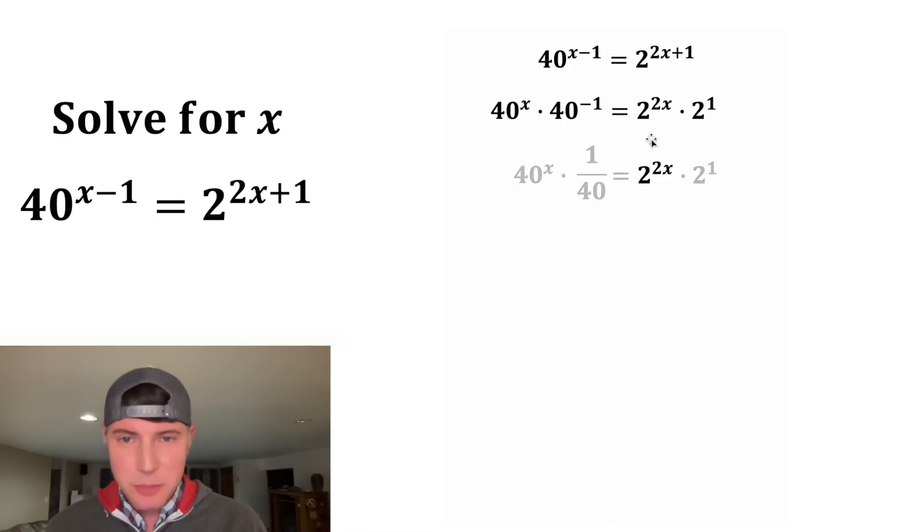Next, we can focus on this piece right here. It's 2 to the power of 2 times x. This is something you can do when you have exponents that are being multiplied. You can rewrite it like this. x to the a times b is equal to x to the a whole thing to the power of b. So we can rewrite 2 to the 2 times x as 2 to the 2 whole thing to the power of x. And this 2 to the one is equal to 2.